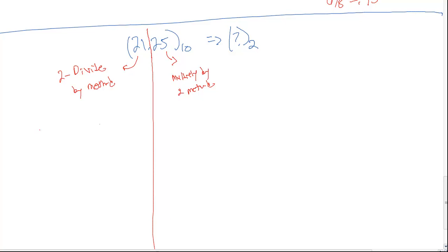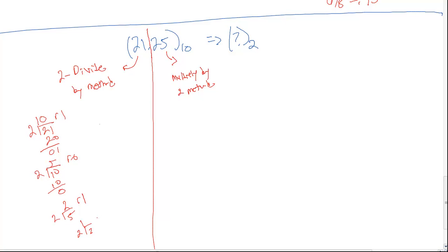Let's do the first part: the 21. 2 goes into 21, 10 times — that's 20, remainder of 1. 2 goes into 10, 5 times, remainder of 0. 2 goes into 5, 2 times, remainder of 1. 2 goes into 2, 1 time, remainder of 0. And finally 2 goes into 1, 0 times, remainder of 1. We read upwards — remember, that's important for the divide by 2 — and we get 1, 0, 1, 0, 1.